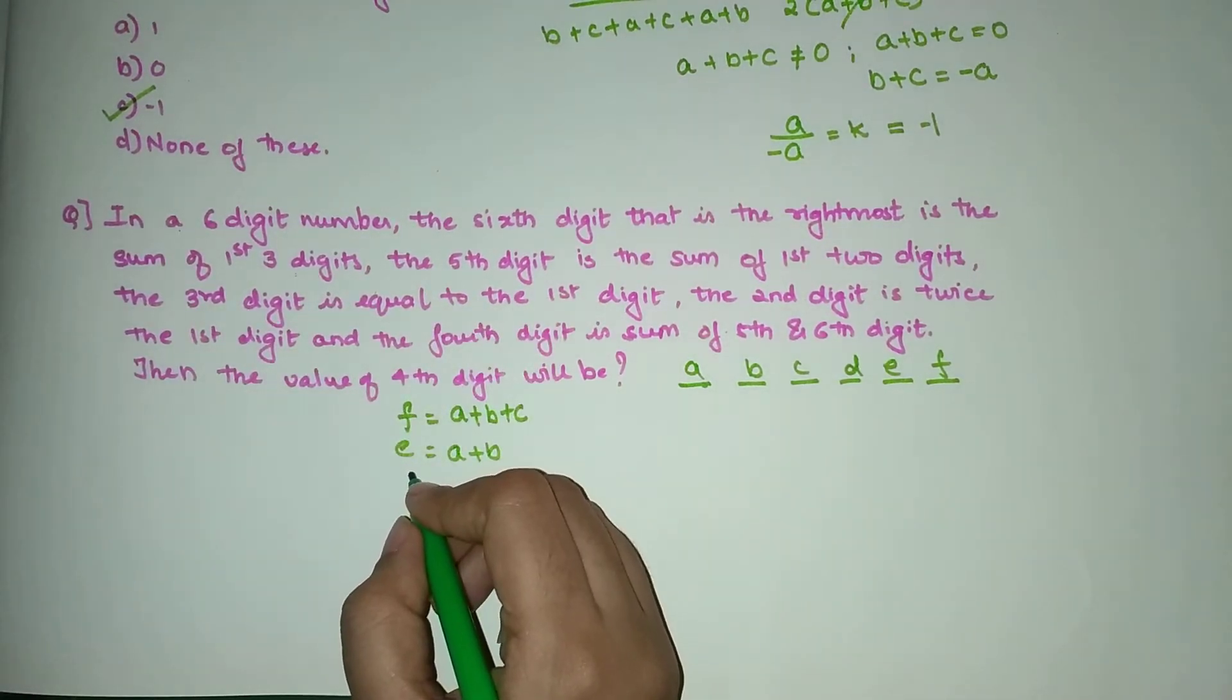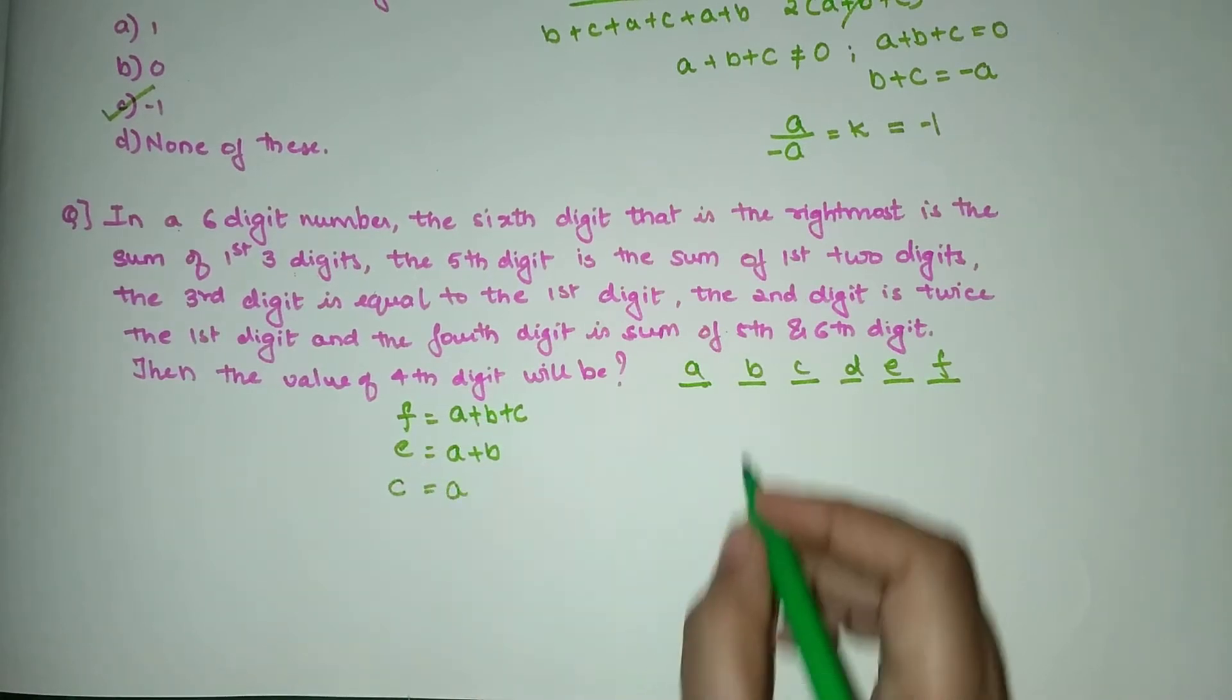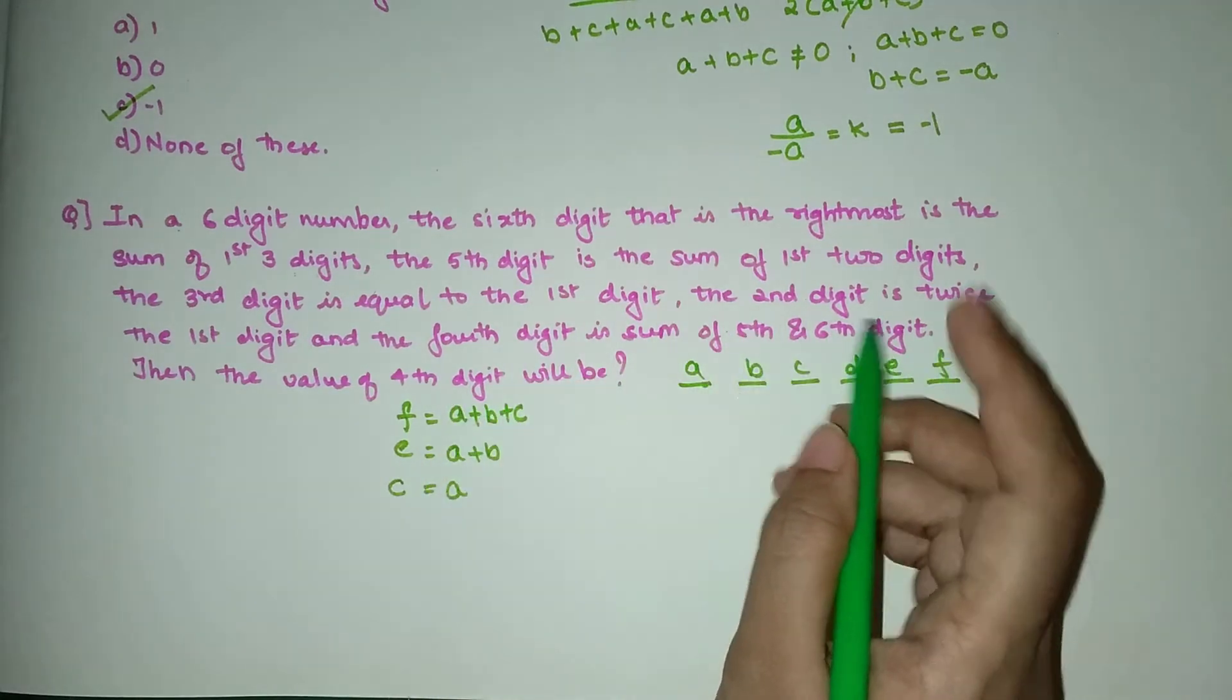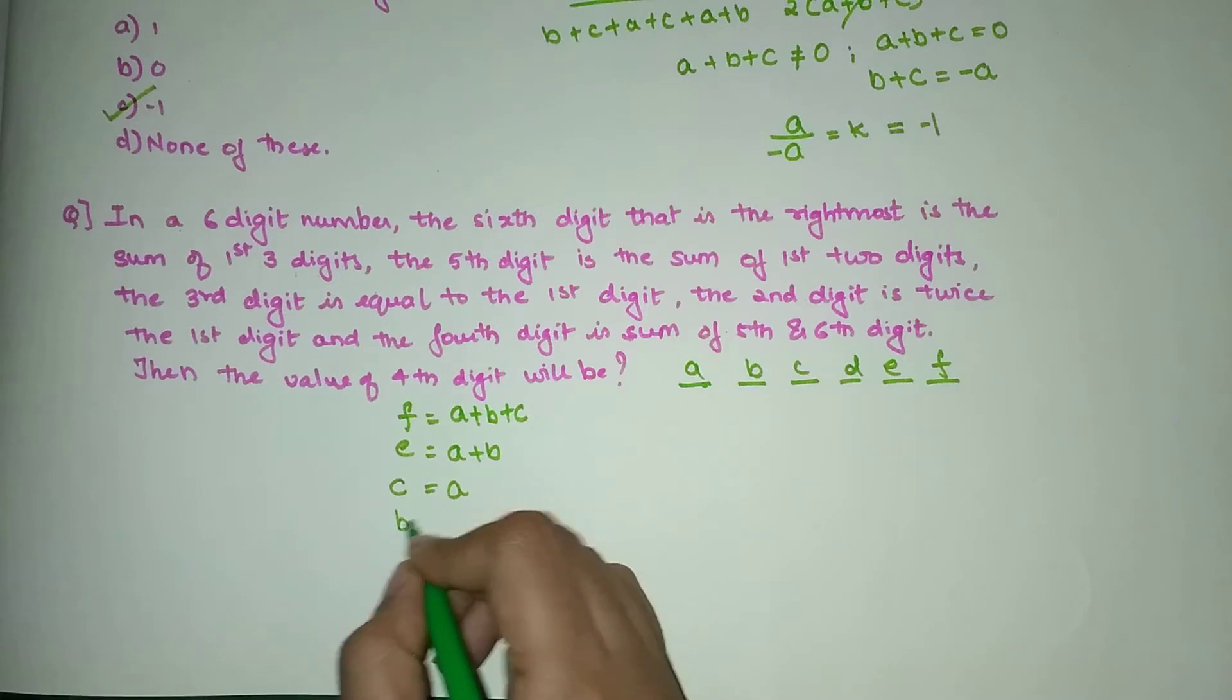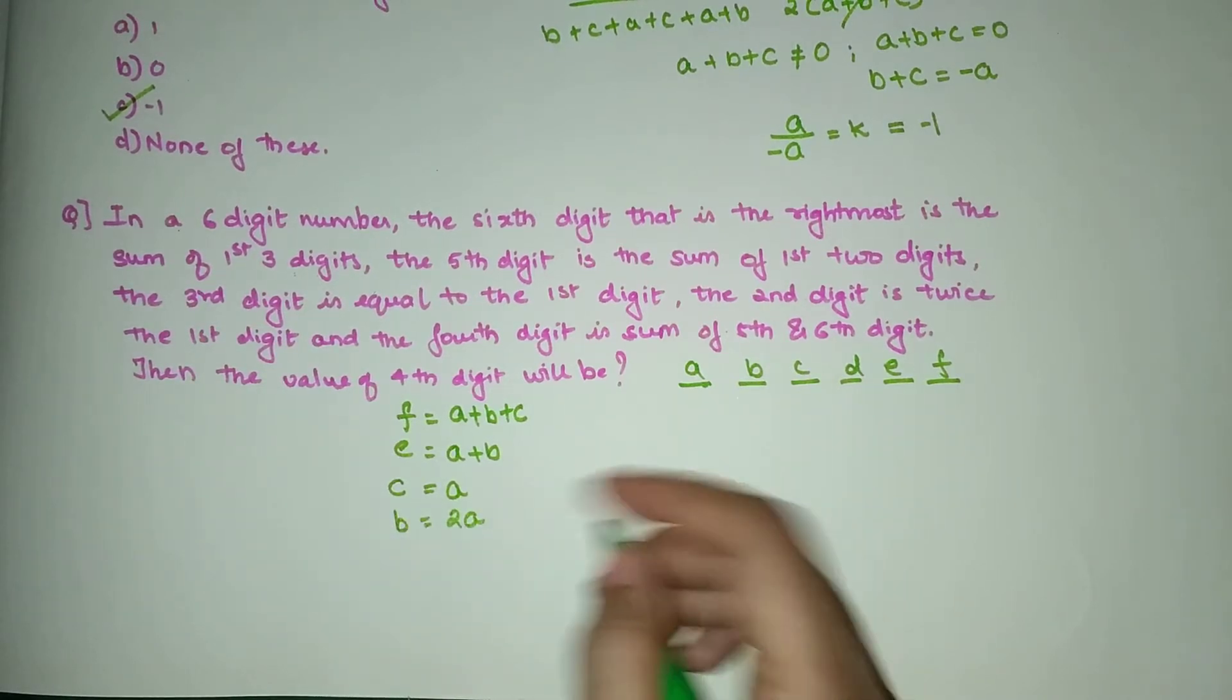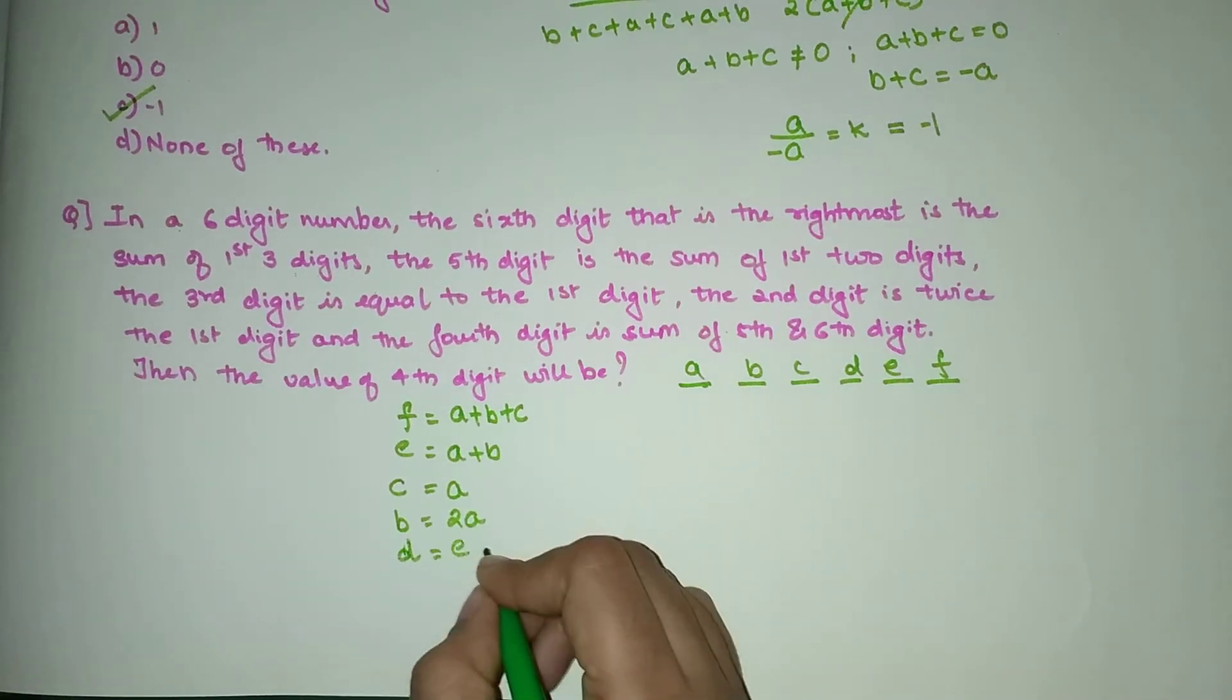Then the second digit is twice the first digit, so B = 2A. And the fourth digit, D, is sum of fifth and sixth, so E+F.